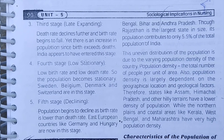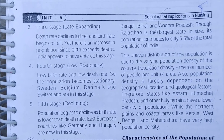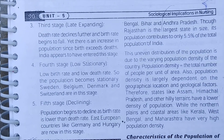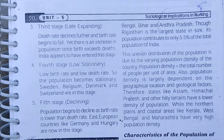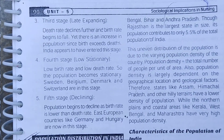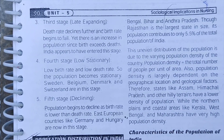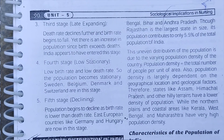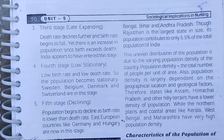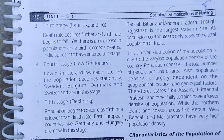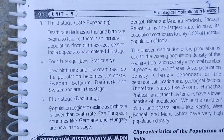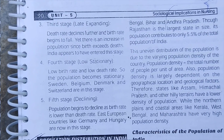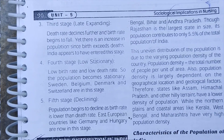The fourth stage is Low Stationary. Both the birth rate and the death rate are low but equal to each other. Very few people are being born and very few are dying. Because both rates are low and the same, the population becomes stationary again. Sweden, Belgium, Denmark, and Switzerland are examples of countries in this stage.